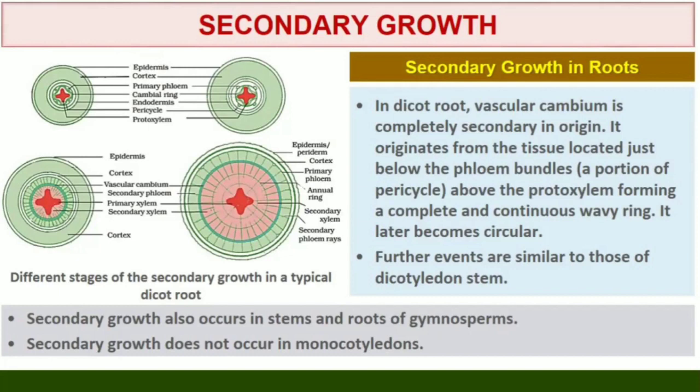Secondary Growth in Roots. In the dicot root, the vascular cambium is completely secondary in origin. It originates from the tissue located just below the phloem bundles, and a portion of pericycle tissue above the protoxylem, forming a complete and continuous wavy ring which later becomes circular. Further events are similar to those already described for a dicotyledon stem. Secondary growth also occurs in stems and roots of gymnosperms. However, secondary growth does not occur in monocotyledons.